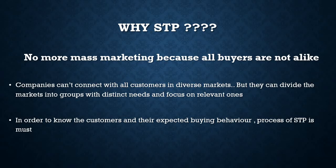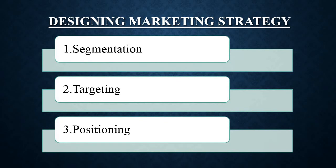Companies cannot connect with all customers in diverse markets. So what they have to do is divide the market into various groups on the basis of different criteria such as needs, and then focus upon the relevant segments. In order to know the customers and their buying behavior, the process of STP is very crucial. Whenever a company wants to design a marketing strategy, it has to go for segmentation, targeting and positioning.